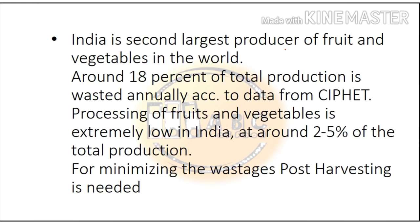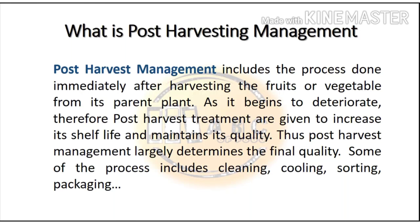India is the second largest producer of fruits and vegetables in the world, and around 18% of total production is wasted annually according to the data. Food processing of fruits and vegetables is extremely low in India, at only around 2 to 5% of total production. To minimize these wastages, post-harvest management is needed.